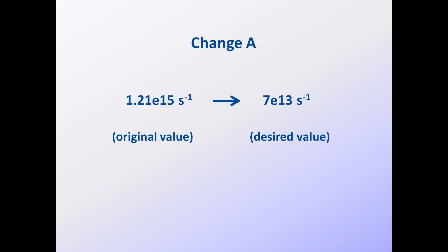Let's assume that we want to change the published A-factor on the earlier slide from 1.21E15 per second to some other value, say 7E13. We begin by recognizing that the original kinetics and the new kinetics must both fit the same pyrolysis data.